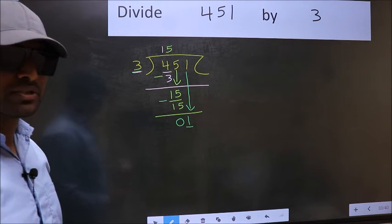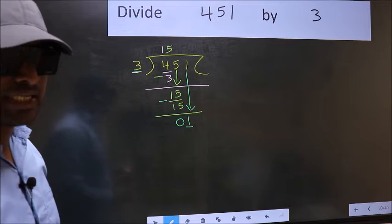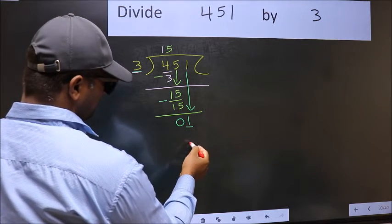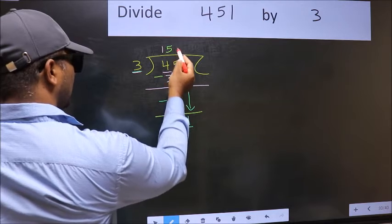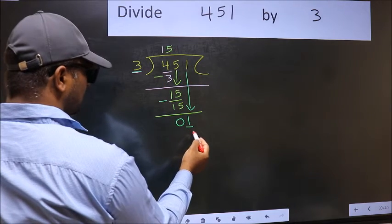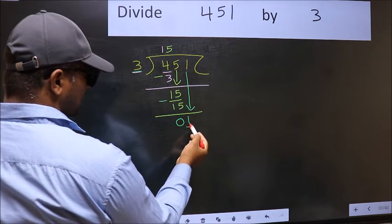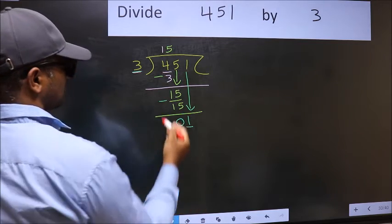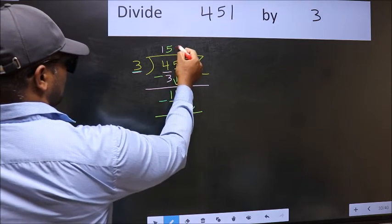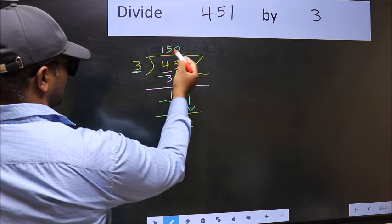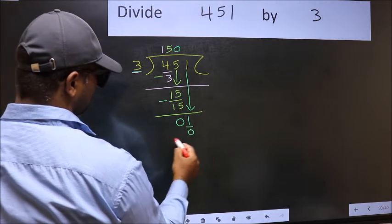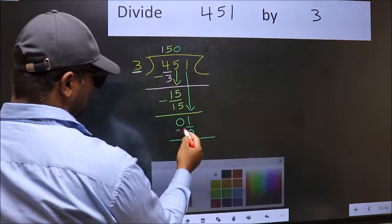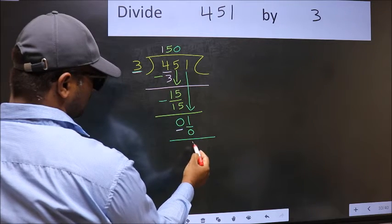Instead, what you should think is: what number should be right here? If I take 1, I will get 3 here, and 3 is larger than 1. So what we should do is take 0. So 3 into 0 = 0. Now subtract: 1 minus 0 = 1.